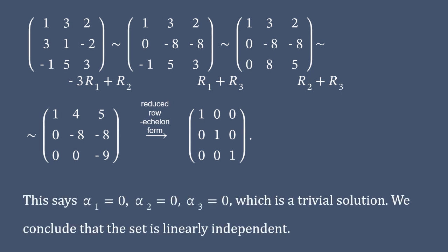It implies that all coefficients alphas are equal to zero, and we can conclude that the rows of a given matrix B are linearly independent.